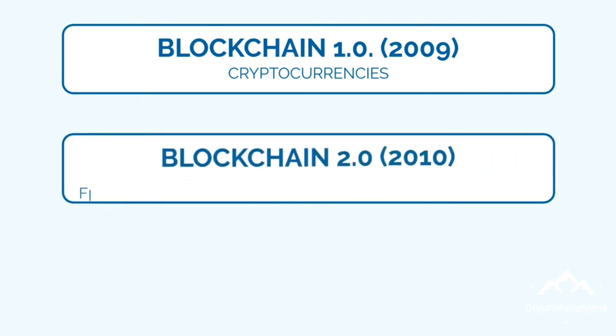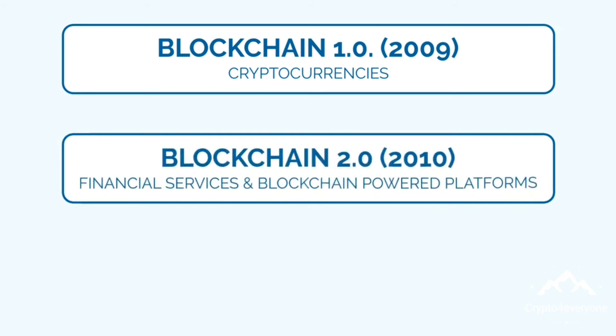Blockchain 2.0, 2010. The second iteration, or tier, of blockchain emerged when thought leaders began to realize that blockchain technology could be applied with real-world benefits outside of the sphere of cryptocurrencies, but still within the confines of the financial industry. Blockchain Tier 2.0 therefore encapsulates the world of financial services, including smart contracts, as well as more recent blockchain-powered platforms, the likes of Ethereum. We'll explore Ethereum in more detail later in this course.